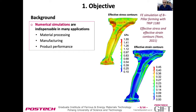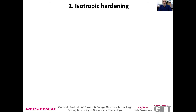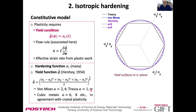We need a constitutive model to do those simulations, and we are going to talk about plasticity. For isotropic hardening, I will go directly to what we see in a pi-plane: the isotropic yield surfaces of von Mises, Tresca, and also Hosford with different exponents, 6 and 8.